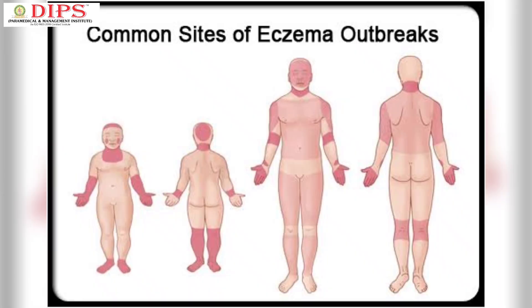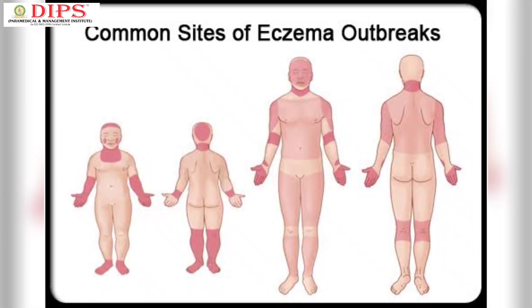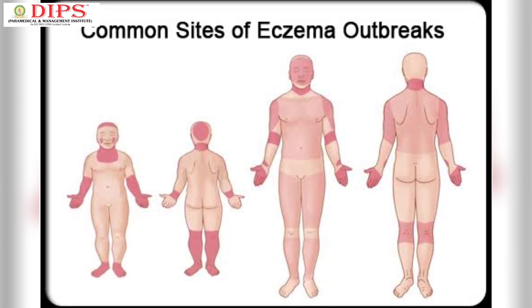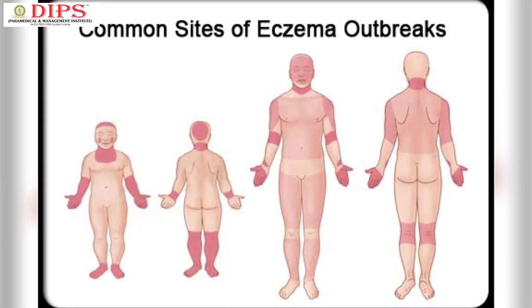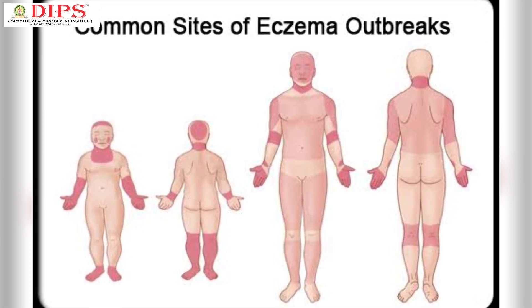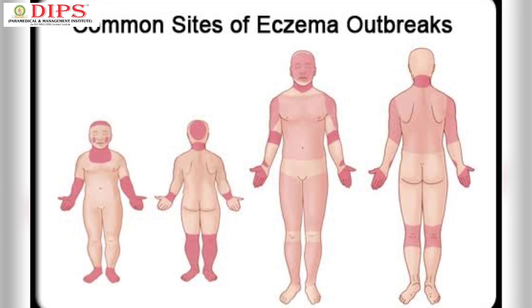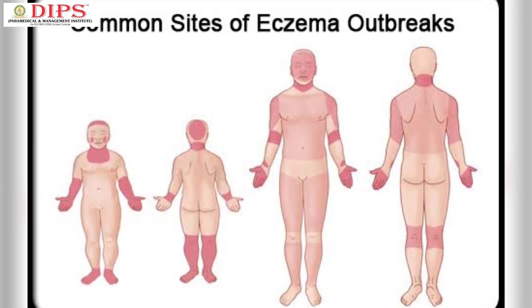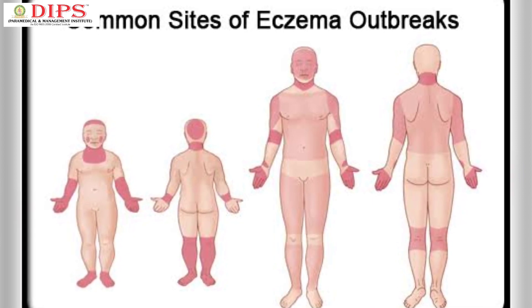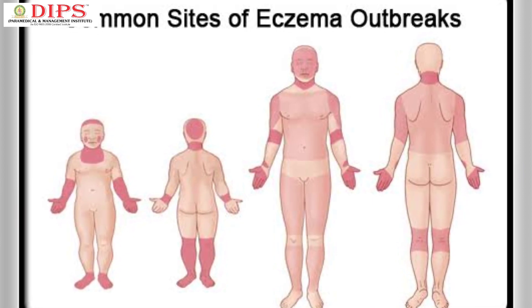In adults, the rash usually happens on your face, the back of your knees, wrist, hands or feet. Your skin will probably be very dry, thick or scaly.